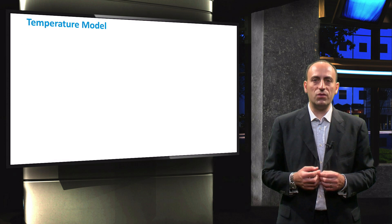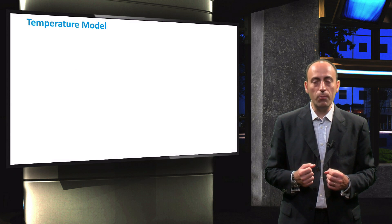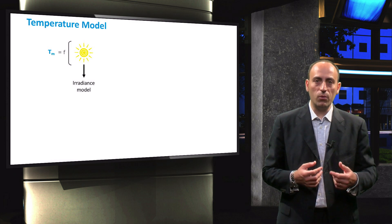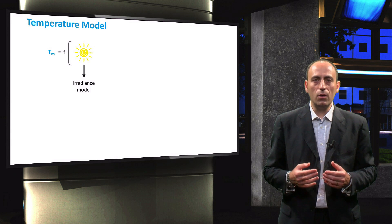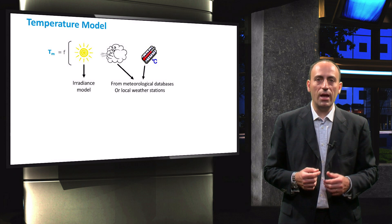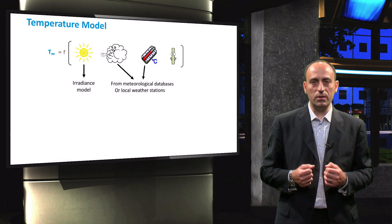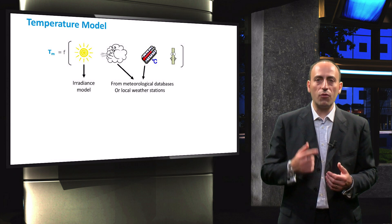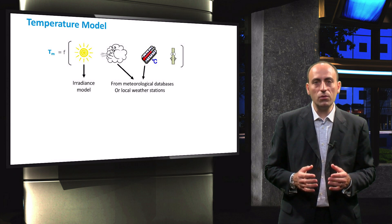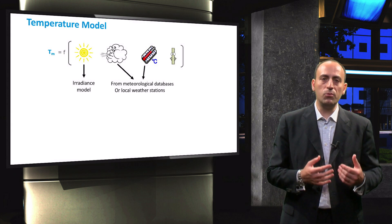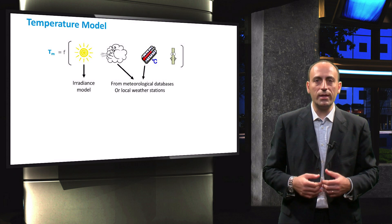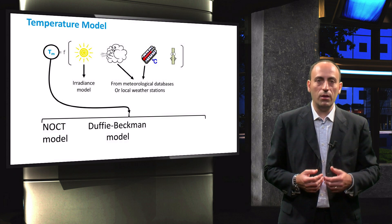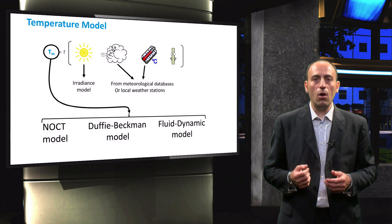For the next step of the PV system design, we want to know the instantaneous operating temperature of the module. We therefore apply the temperature model, which uses the instantaneous irradiance calculated in the previous step as input. This model also requires the on-site wind speed and ambient temperature, as well as the mounting configuration of the PV system. The data for wind speed and ambient temperature can be obtained from a meteorological database or from a local weather station. Please note that meteorological data should have the same time interval as the input from the irradiance model. With this input, we can calculate the temperature of the PV module using one of the temperature models: the NOCT model, the Duffy-Beckman model, or the fluid dynamic model.